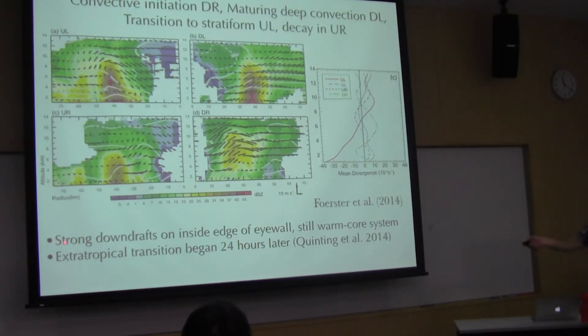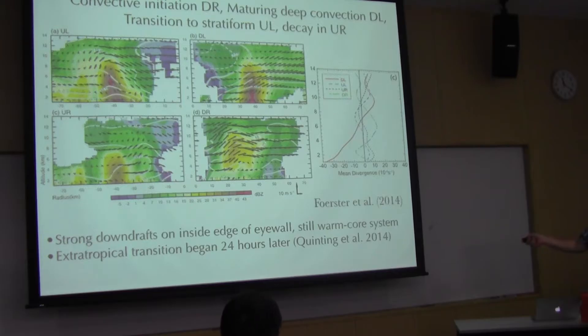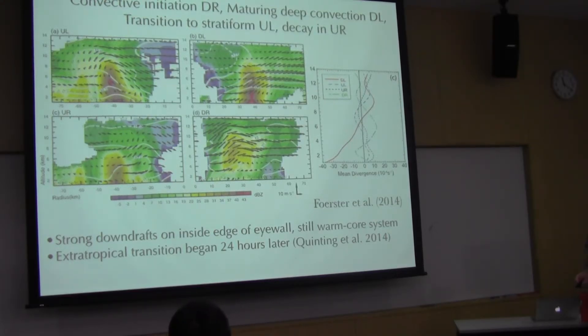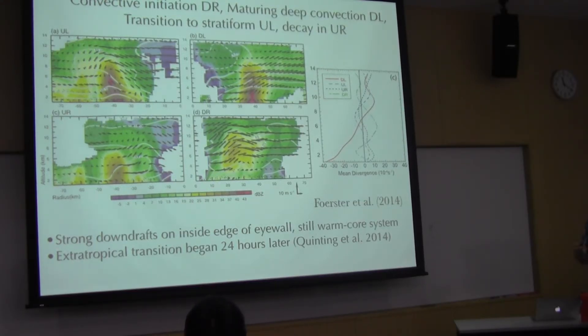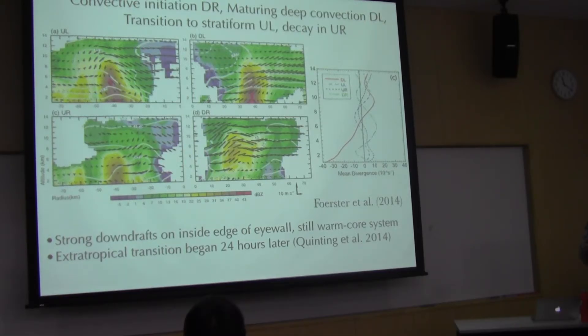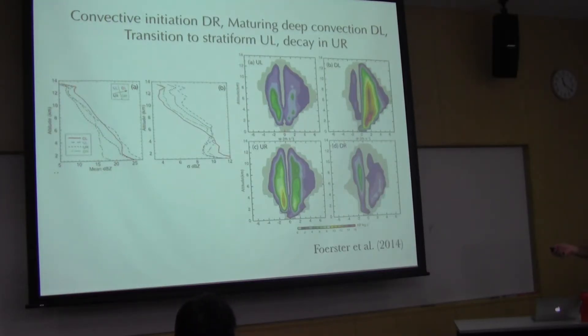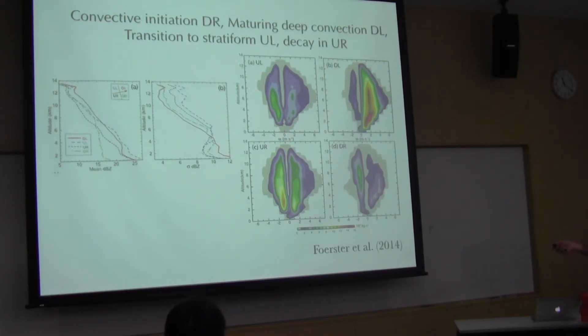Similar type of features. As I mentioned, it was still very warm core. We do have some dropsonde observations that suggest we still have a nice maximum in the middle. Julian's paper talks about the frontal structure. He does a nice QG analysis and front genesis analysis if you're interested in that. But I won't have time for that today. I think I have one more slide and then maybe it's time for another break.